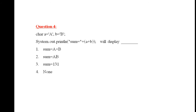Question 4: char a = 'A', b = 'B'; System.out.println("sum = " + (a + b)). What will be displayed? The message 'sum = ' is printed as-is, then a plus b is evaluated: 'A' has ASCII value 65 and 'B' has ASCII value 66, so 65 + 66 = 131. The correct answer is: sum = 131.